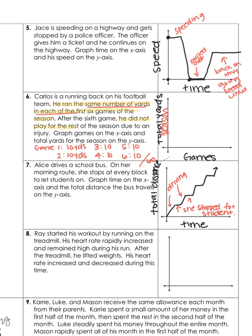Question eight says: Ray started his workout by running on the treadmill. His heart rate rapidly increased and remained high during his run. Label the x-axis as time and the y-axis as his heart rate, and try to figure this one out on your own.